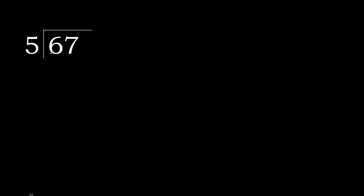67 divided by 5. Starting with 6: 5 multiplied by which number is nearest to 6 but not greater? 5 multiplied by 2 is 10 — 10 is greater. 5 multiplied by 1 is 5 — not greater. 6 minus 5 is 1. Next.